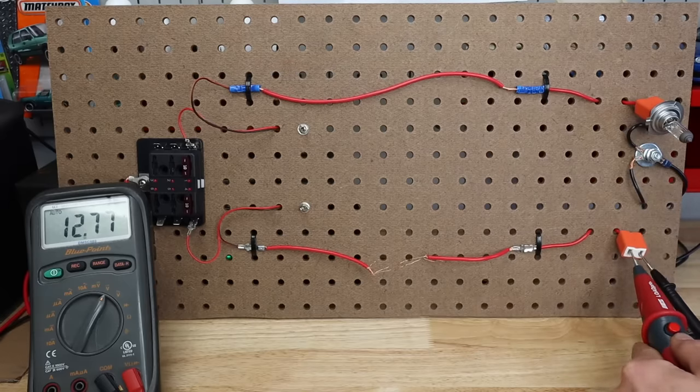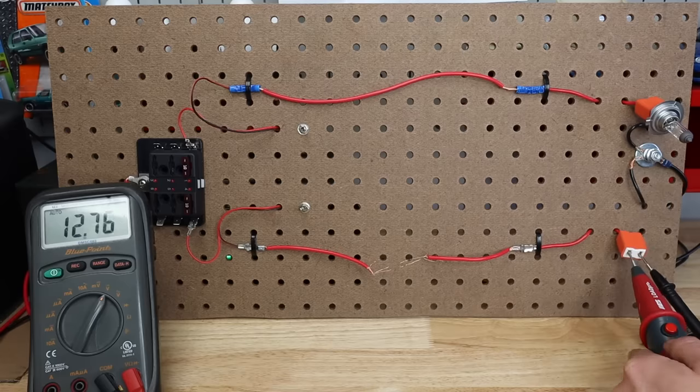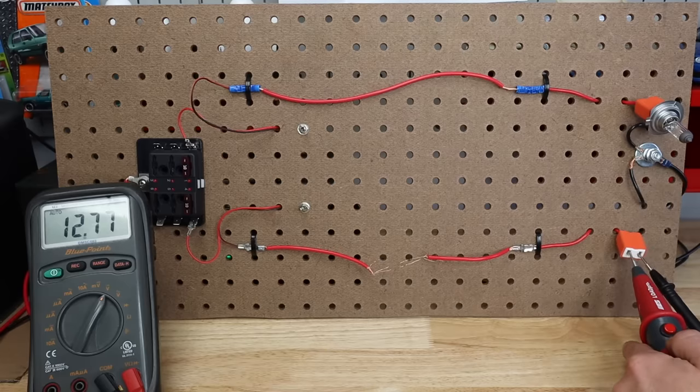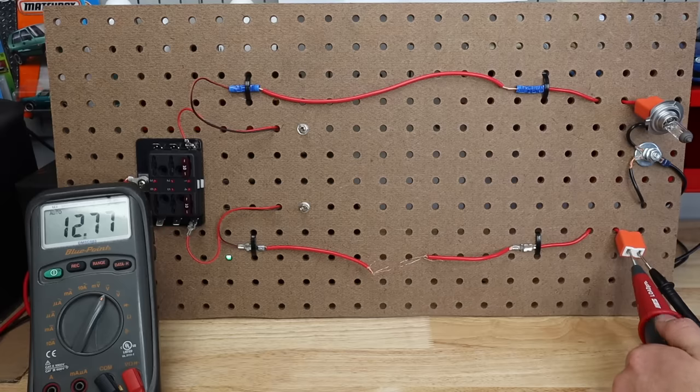So first we'll turn it on, we'll do our positive lead in the positive connector, negative lead on the negative side. We got 12.77 volts. We know we have power and we know we have ground so we don't have an open circuit and we don't have a short to ground.